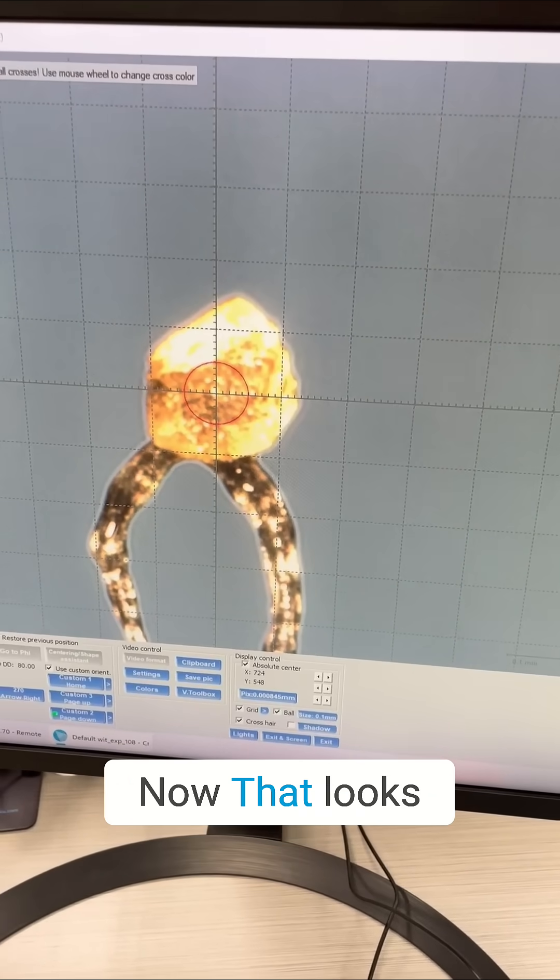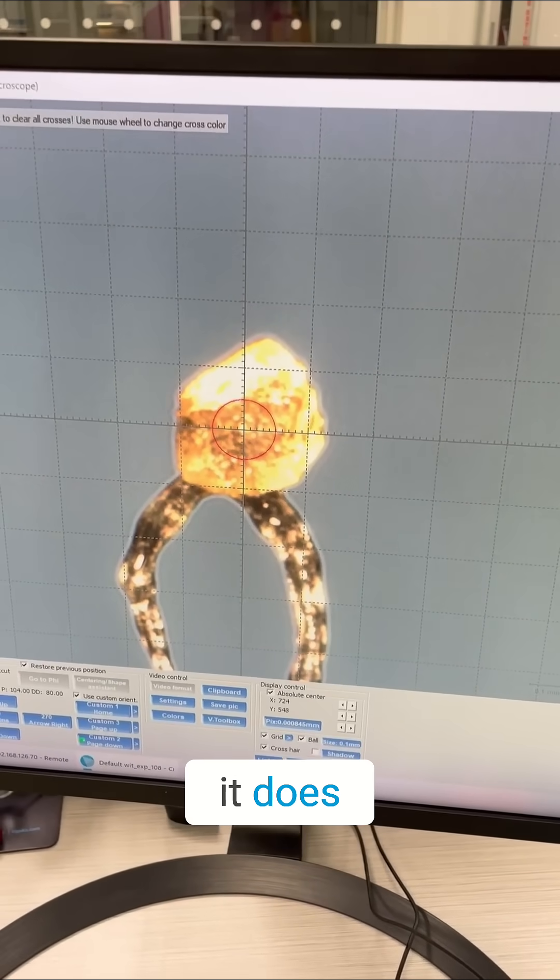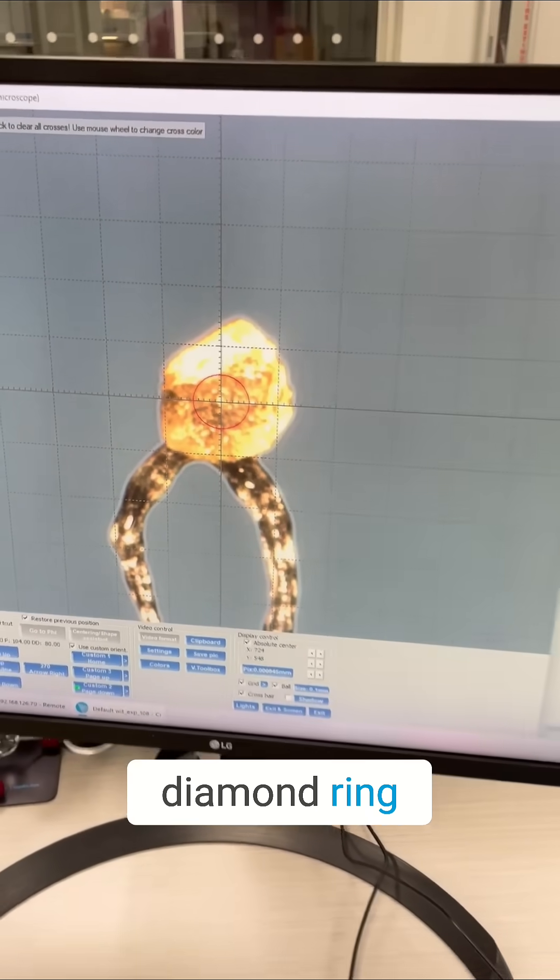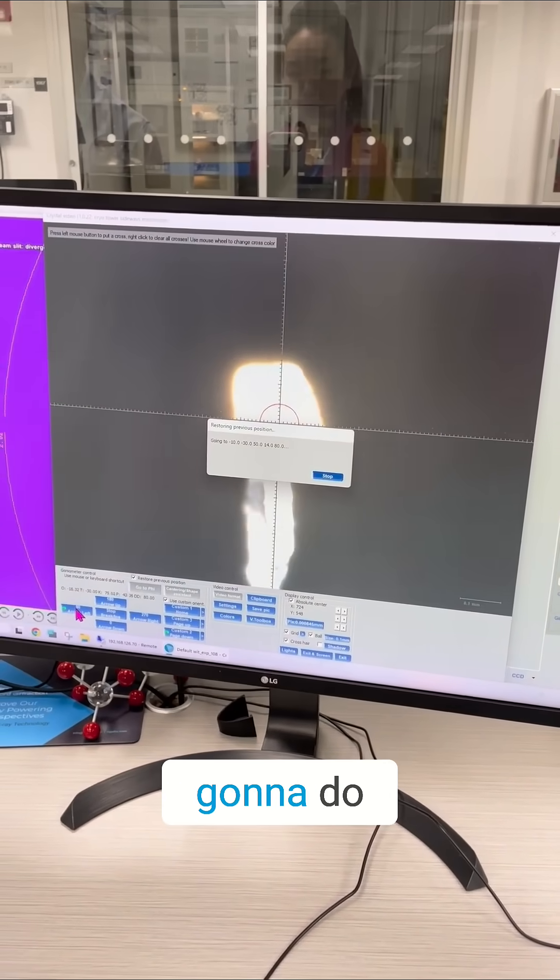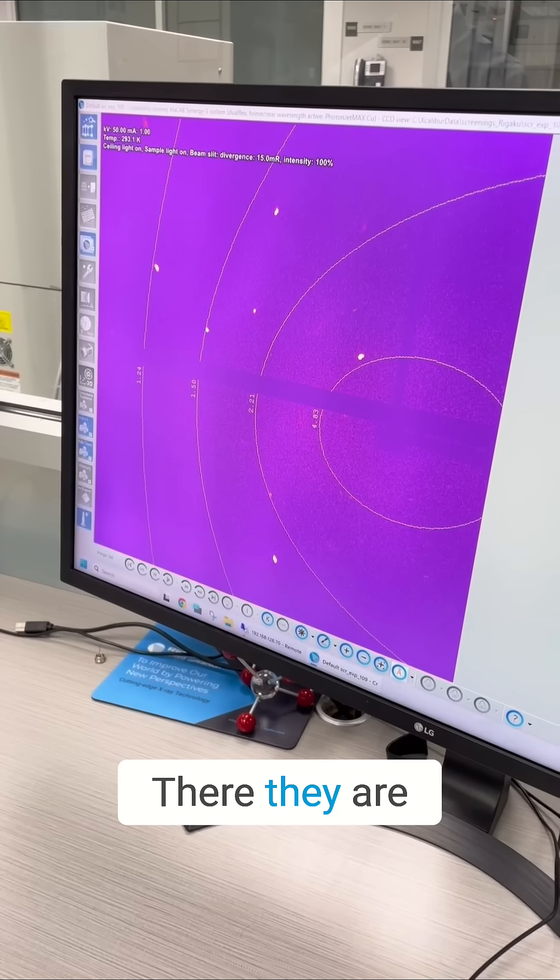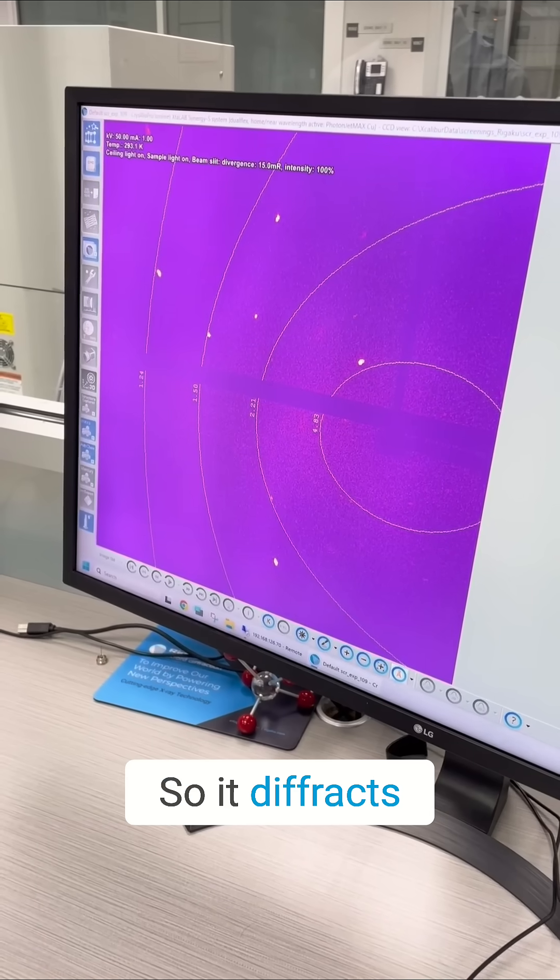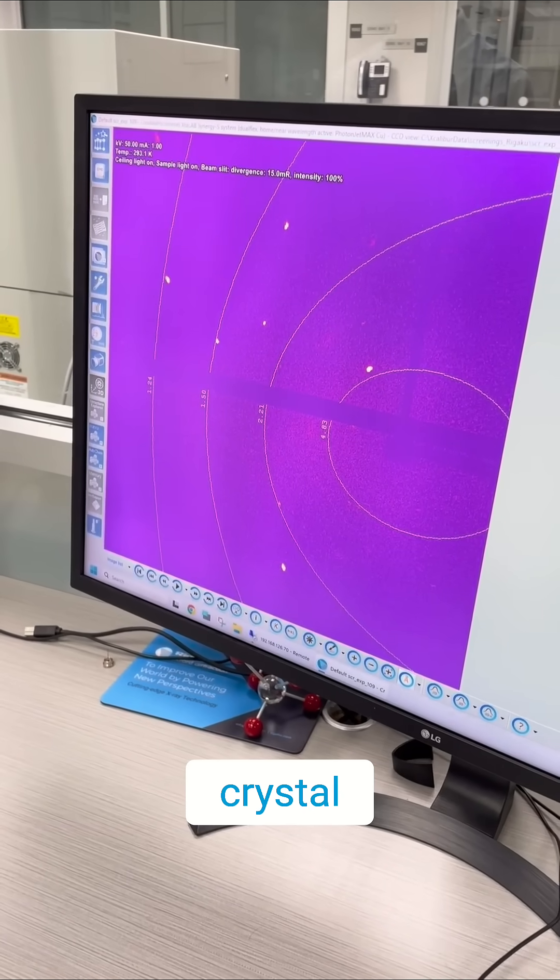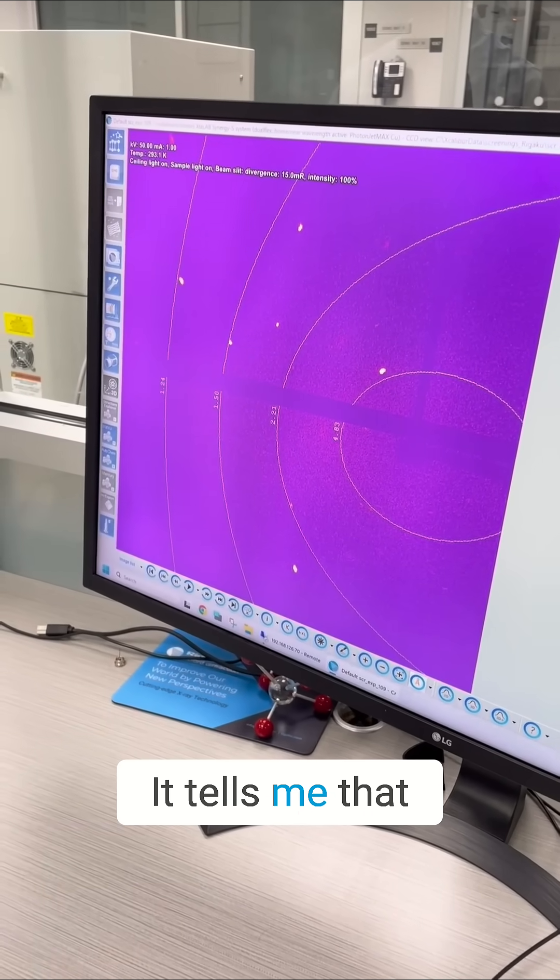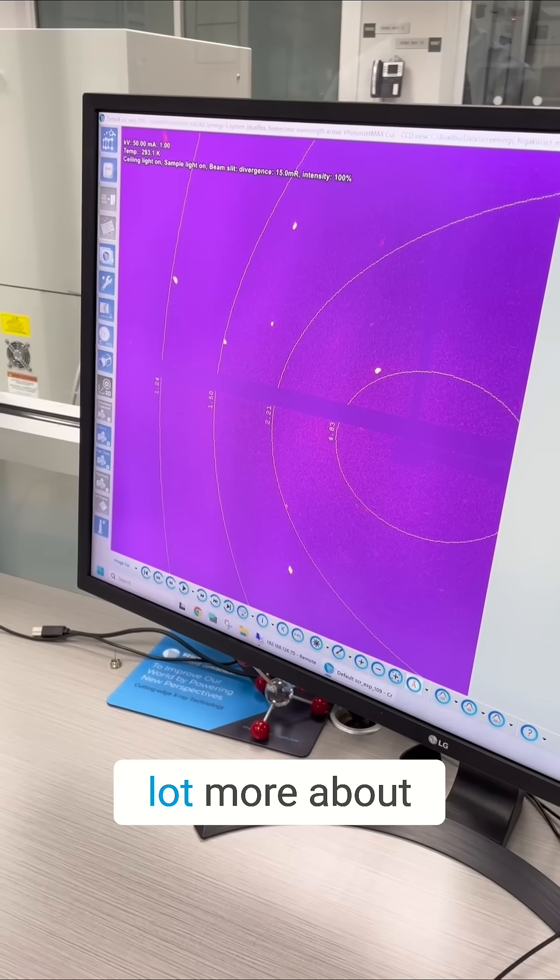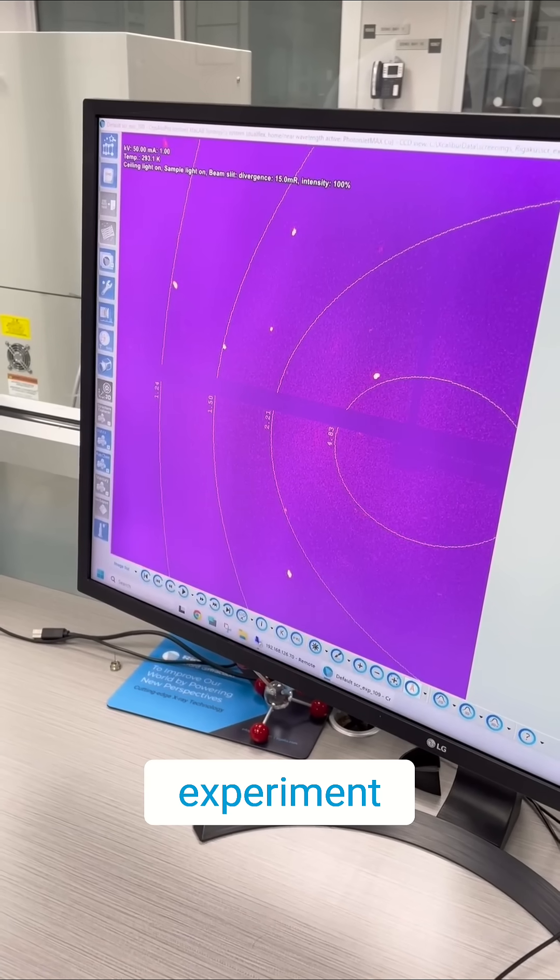Now, that looks like a ring. Yeah, it does. It looks like a diamond ring. First thing we're going to do, we're just going to check to see if it is a crystal. There they are. See all those spots? So it diffracts x-rays. It is a good crystal. It tells me that I can learn a lot more about this if I just do a simple experiment.